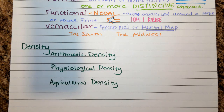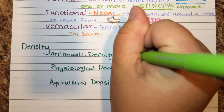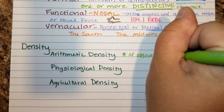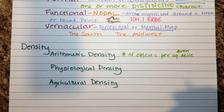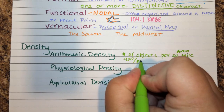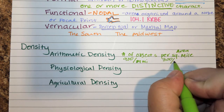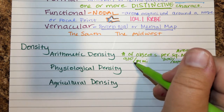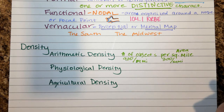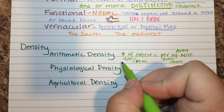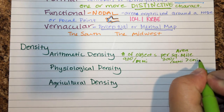Arithmetic density is pretty basic — it's the total number of objects in a specific area, measured as number of objects per square mile. For instance, Belgium has about 900 people per square mile and China has about 300 people per square mile. So Belgium has a higher density, even though China is technically more populated overall.